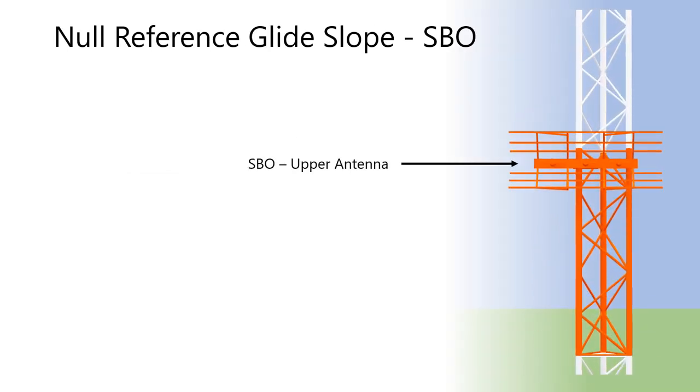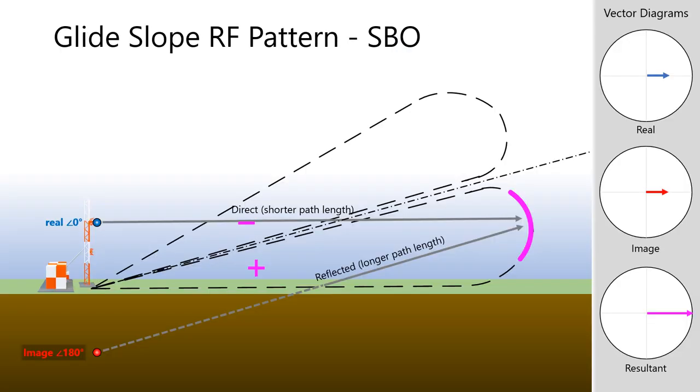Let's now discuss SBO RF pattern development. The SBO antenna is twice the height of the lower CSB antenna, or half a wavelength above ground, for the desired glide path angle. In other words, the null reference glide slope has an antenna height ratio of two to one. Due to the increased height of the antenna, the vectors arrive in such a way as to create a signal maximum at approximately 1.5 degrees below the desired three-degree glide path angle, and take note of the relative phase of each lobe in the SBO pattern.